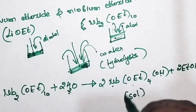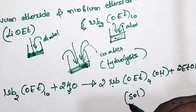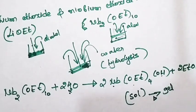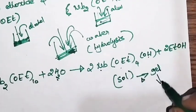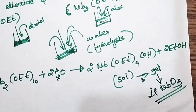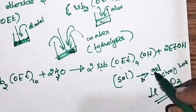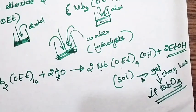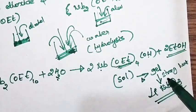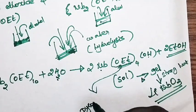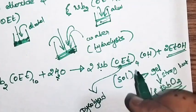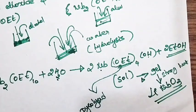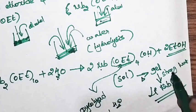Once the sol is obtained, you need to heat it so that it gets converted into gel — a three-dimensional network structure. Once gel is formed, you need to heat it very strongly (calcination) so that you end up with the solid lithium niobate. The strong heat causes: the ethanol solvent added to dissolve the reactants to evaporate, the water added for hydrolysis to evaporate, and the ethoxide/ethyl part of the groups to pyrolyze, producing carbon dioxide and water.